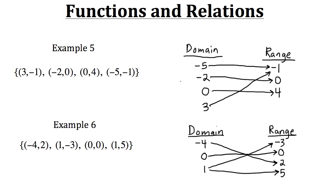For example, we have a mapping diagram here for the relation in example 5. We have a domain of negative 5, negative 2, 0, and 3. Negative 5 has only one output — negative 1. Negative 2 has only one output — 0. And 0 has only one output — 4. And 3 also has only one output. So each input in the domain has only one arrow pointing towards a value in the range, making this relation a function.